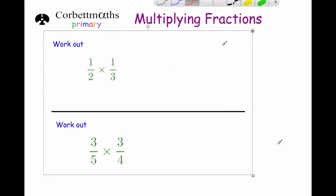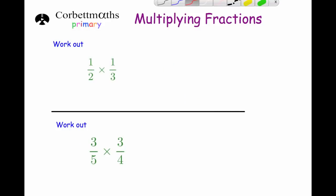Let's look at some questions. First, a half times a third: multiply the numerators — 1 times 1 is 1 — and the denominators — 2 times 3 is 6 — giving one sixth. Next, 3 fifths times 3 quarters: 3 times 3 is 9 and 5 times 4 is 20, so the answer is 9 twentieths.